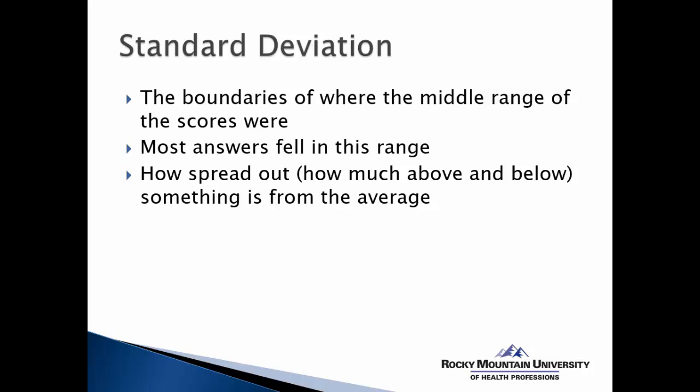How spread out, how much above or below something is from the average, so how much variability or dispersion there is of scores above and below the mean or the average. Another good way to put this is the majority of subjects, again assuming a normal distribution, the majority of subjects had a score that fell within this range.